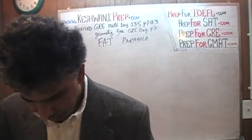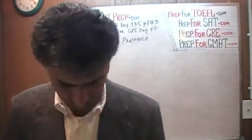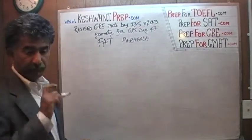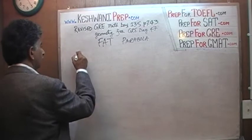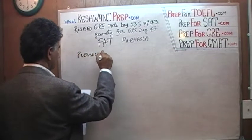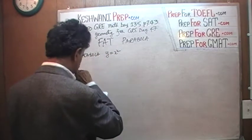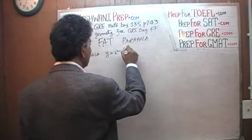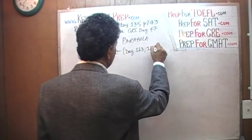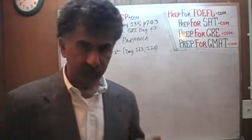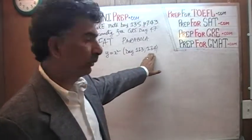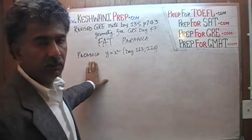On page 243 we have a parabola. We know what the equation of a parabola looks like because we have dealt with it before. The equation of a parabola is y equals x squared. For those of you who have not watched these videos yet, make sure you go back and watch day 123 and day 124 — that's when we learned a bit about parabolas.